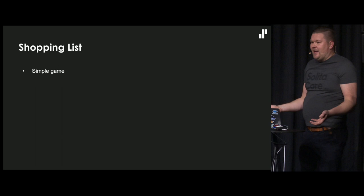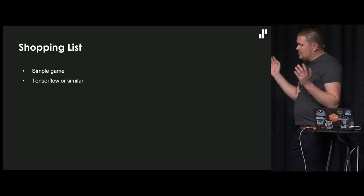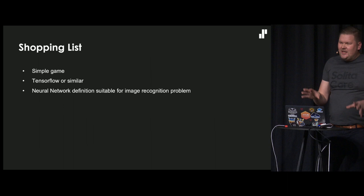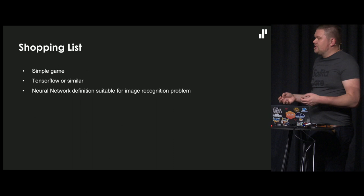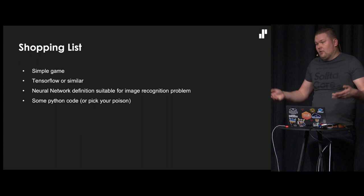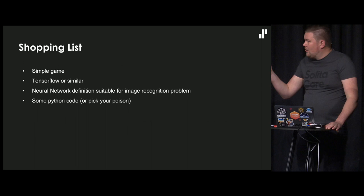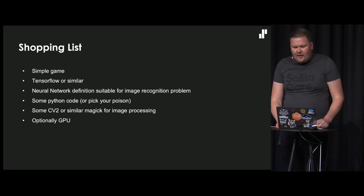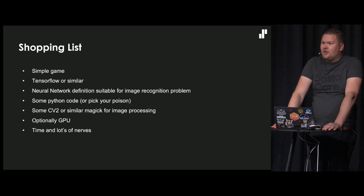We need a shopping list. Of course, you need a simple game. Then you need TensorFlow or similar - there are lots of neural network tooling out there, but I've been using TensorFlow. You need a neural network definition suitable for an image recognition problem. You need some Python code - Python is probably the most used language for these things. Then you need something to do image processing, like CV2. And optionally, you need a GPU, plus lots of time and good nerves.